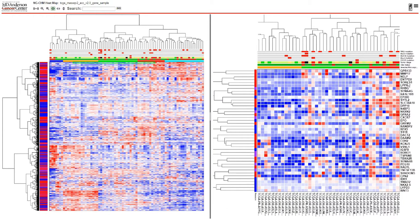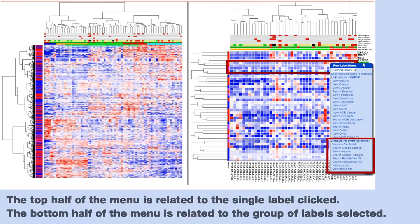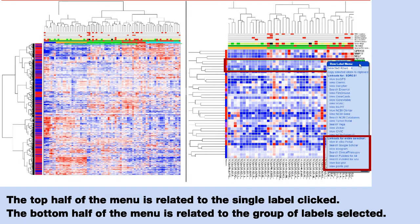If one or more labels are selected, the label menu contains additional entries that apply to the selection. When one of these entries is selected, the menu action will apply to the selected label or labels.